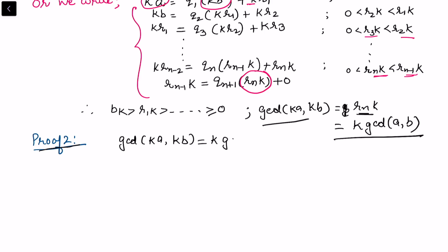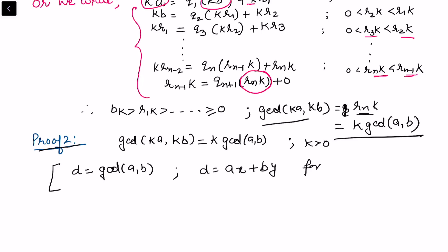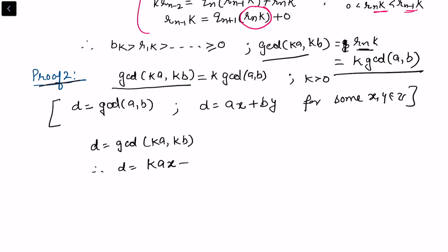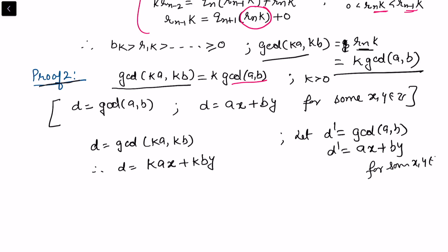Another simple proof of this theorem: we need to prove that gcd(ka, kb) = k·gcd(a, b) for k strictly positive. We know from a previous video that whenever d is the gcd of integers a and b, we can write d as a linear combination ax + by for some integers x and y. Following this, let d be the gcd of ka and kb, so d = kax + kby. Let d' be the gcd of a and b, written as ax + by. Then d = k·(ax + by) = k·d', proving the result.